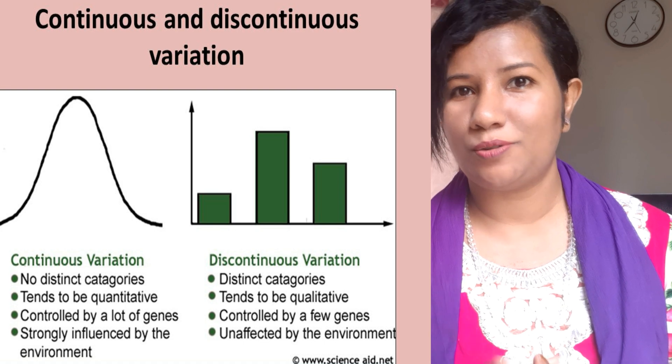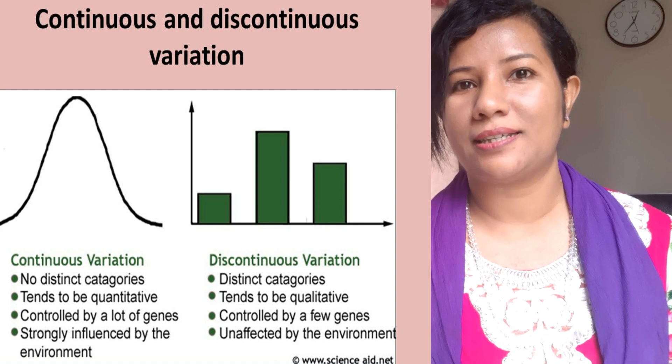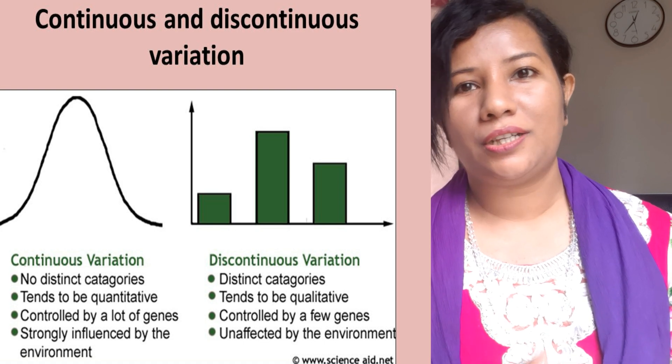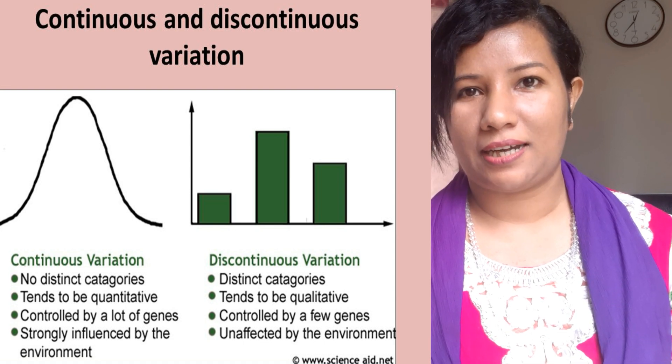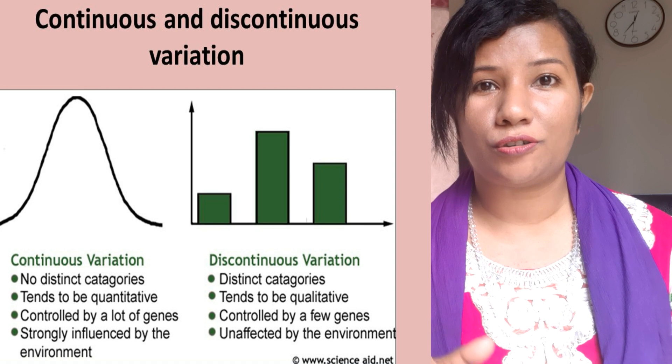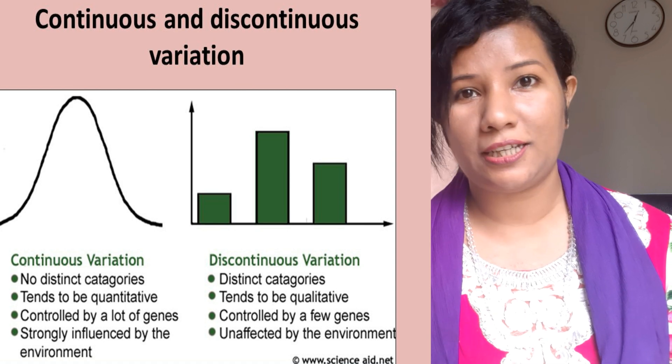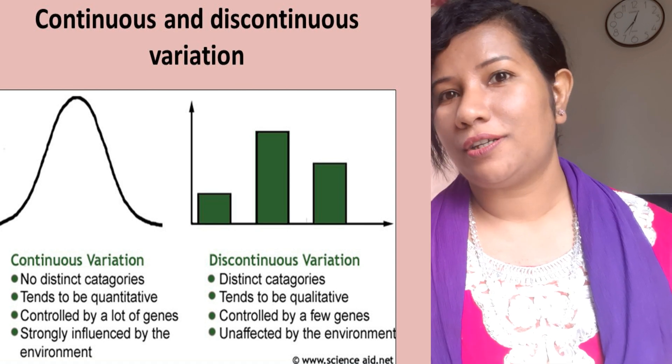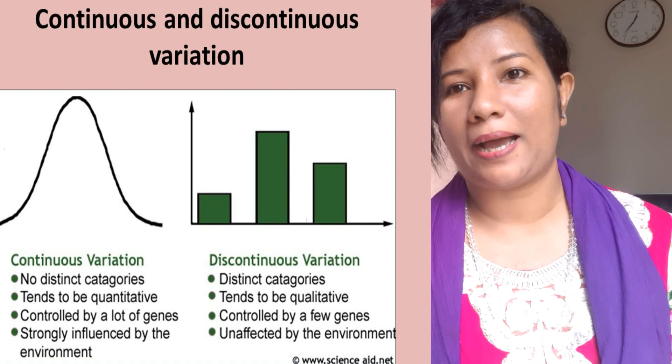Discontinuous variation is controlled by a few genes, and continuous variation is controlled by many genes. So here is 'few genes' for discontinuous and 'many genes' for continuous variation.